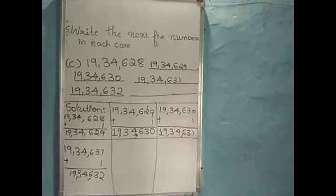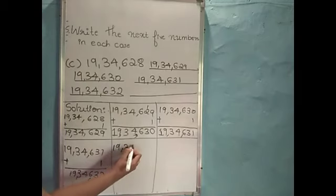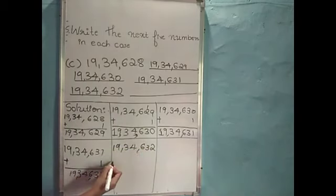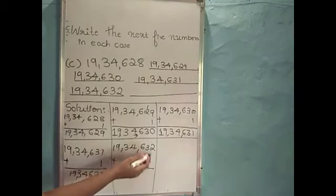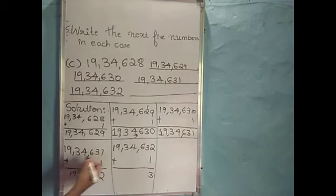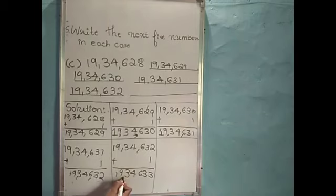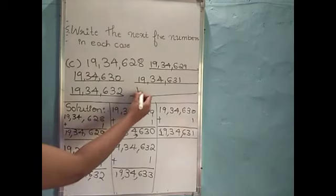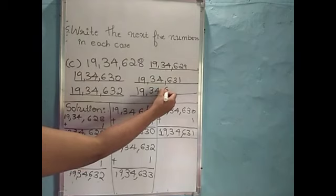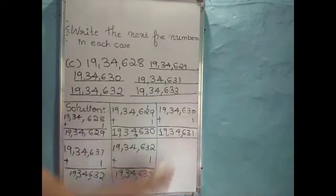If we add 1 to this number, then we will get the next number. So I will write here 19,34,632. After that I will add 1: 2 plus 1 is 3. Write remaining numbers as it is: 3, 6, 4, 3, 9 and 1. So the answer is 19,34,633. Solve these problems in your notebook.